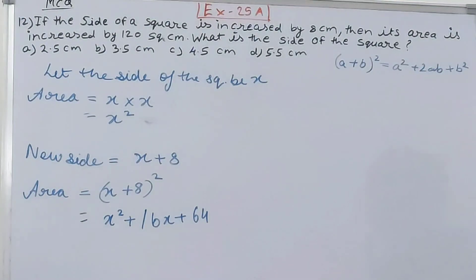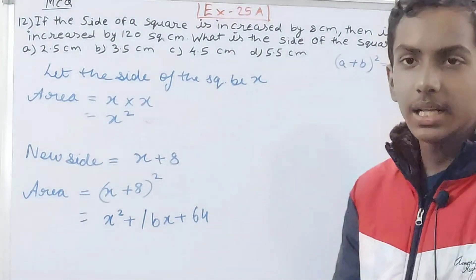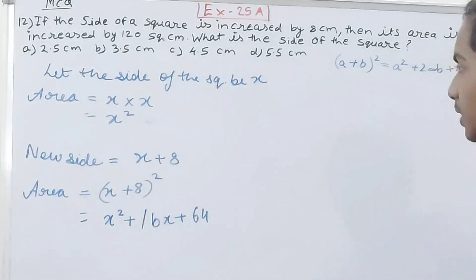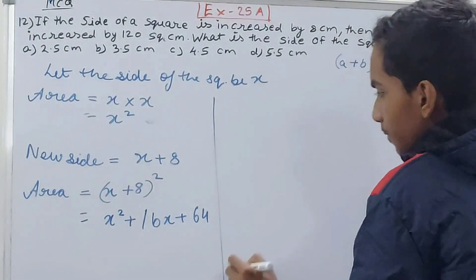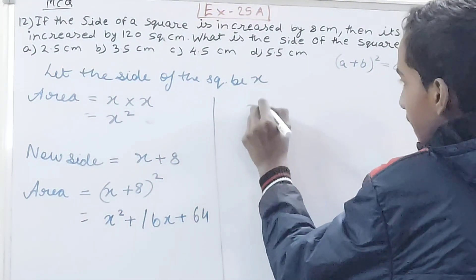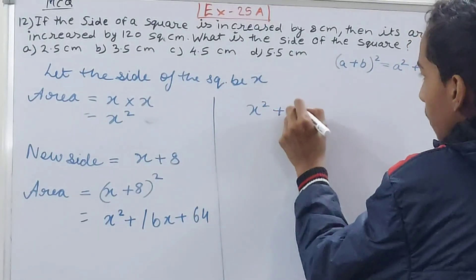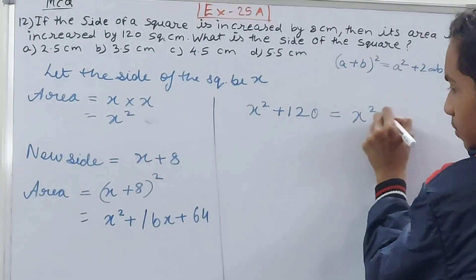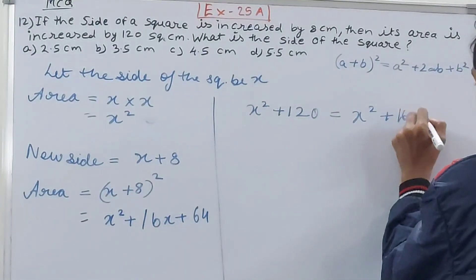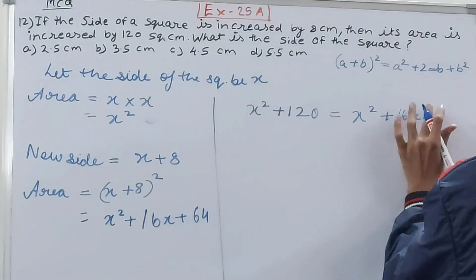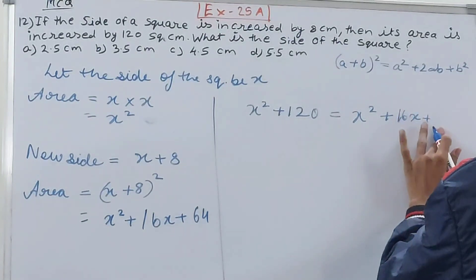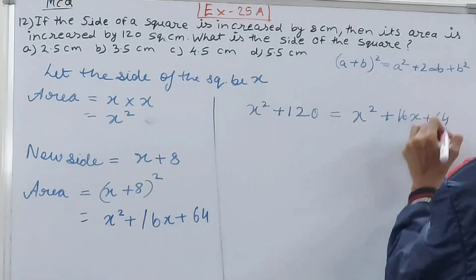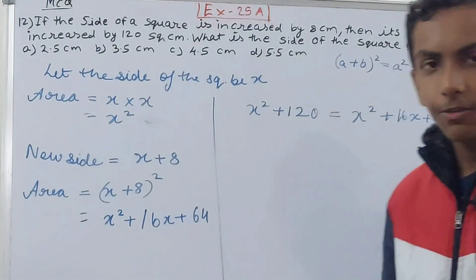What else it says? The area is increased by 120 square centimeters. This means that if in my old area x squared I will add 120, then I will get this new area that is x squared plus 16x plus 64. And this way we have formed our equation which we can solve.